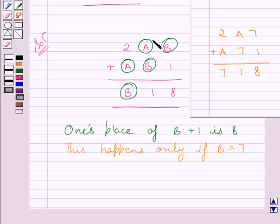Now observe the addition in tens column. Clearly you can see one's place of A plus B is 1. Now for B equals 7, A plus B is 1 in tens column only if A equals 4.